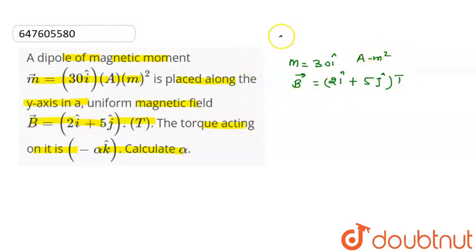The given values are provided. What we have to calculate is the torque. The torque formula is tau equals M cross B. So tau equals M cross B. This is 30i cross (2i plus 5j).